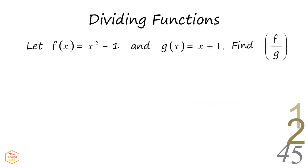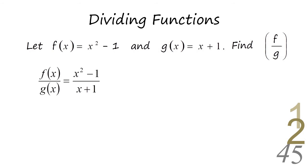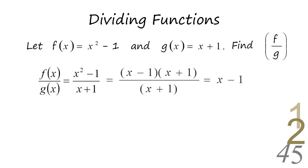Let's try to divide these given functions. For function f of x equals x squared minus 1, and g of x equals x plus 1, find f divided by g. When dividing functions, look for ways to simplify the function. In this case, we can factor the numerator. Afterwards, look for similar factors that can be cancelled out.